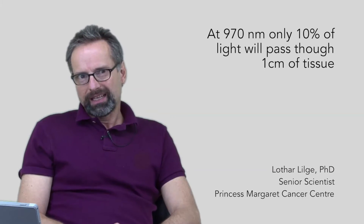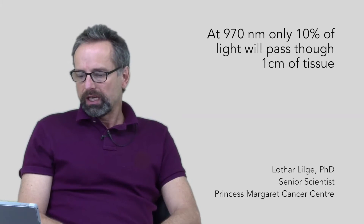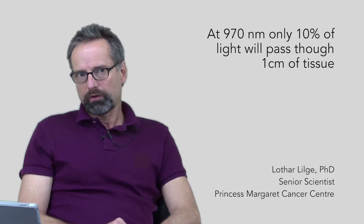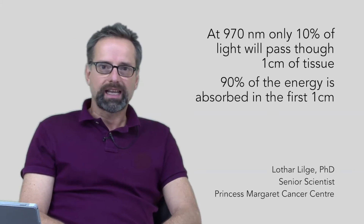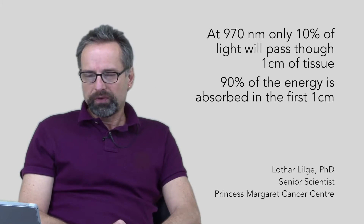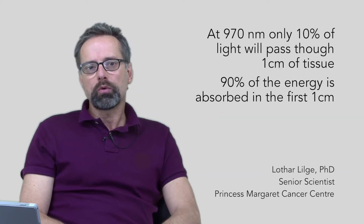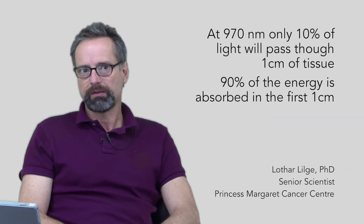At 970 nanometers — typically the longest wavelength currently used in low-level laser therapy — the maximum permissible exposure is about 800 milliwatts per square centimeter. If we expose skin for only 15 seconds, we would deliver roughly 12 joules per square centimeter. In that wavelength range, the attenuation of light by tissue is such that only about 10% of the light passes through one centimeter of tissue, meaning 90% is absorbed.